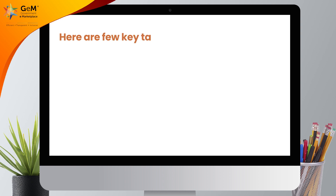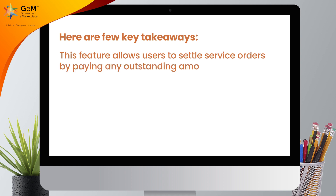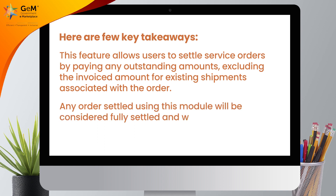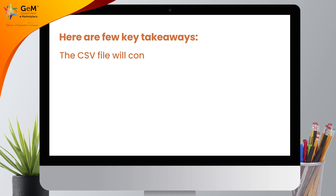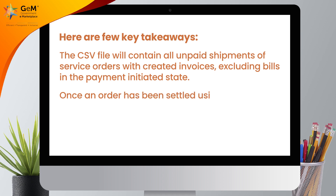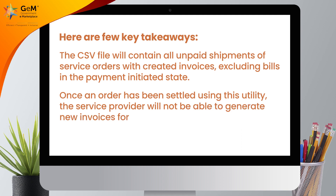Here are a few key takeaways. This feature allows users to settle service orders by paying any outstanding amounts, excluding the invoiced amount for existing shipments associated with the order. Any order settled using this module will be considered fully settled and will not be included in subsequent downloads. The CSV file will contain all unpaid shipments of service orders with created invoices, excluding bills in the payment-initiated state. Once an order has been settled using this utility, the service provider will not be able to generate new invoices for that order.